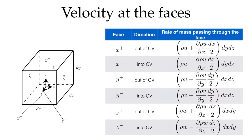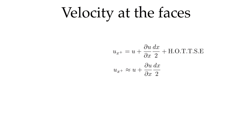To evaluate velocity on the faces, we know the values at the center and we express variables as Taylor series. For example, the velocity at the x-plus face is approximately the velocity at the center plus (∂u/∂x)(dx/2). We neglect the higher-order terms, and when we shrink this down to a point, that approximation becomes exactly correct.